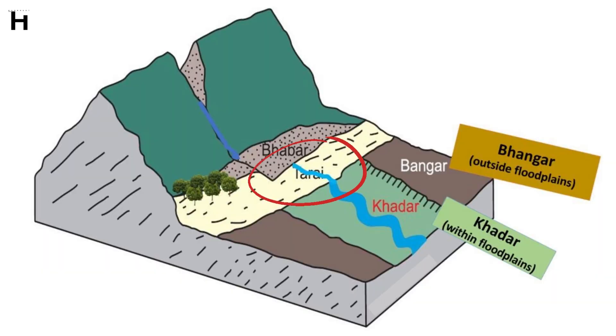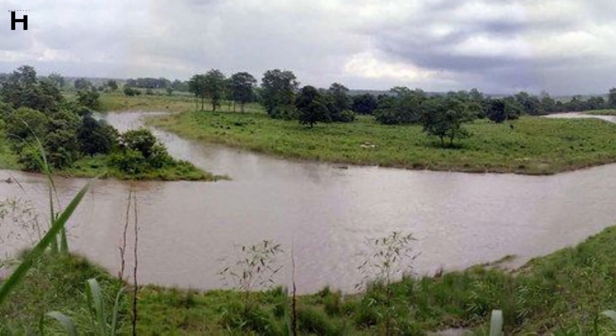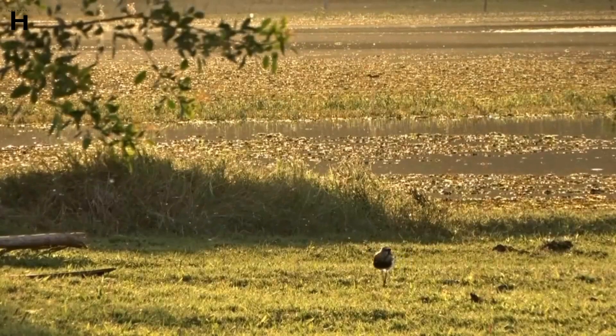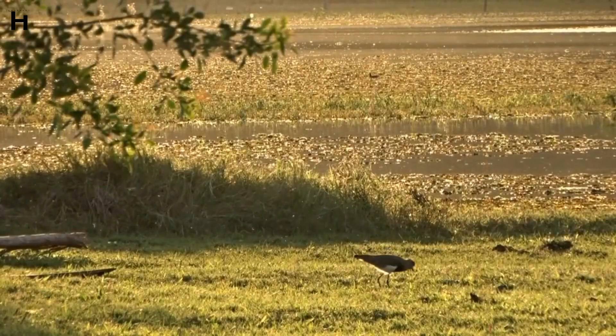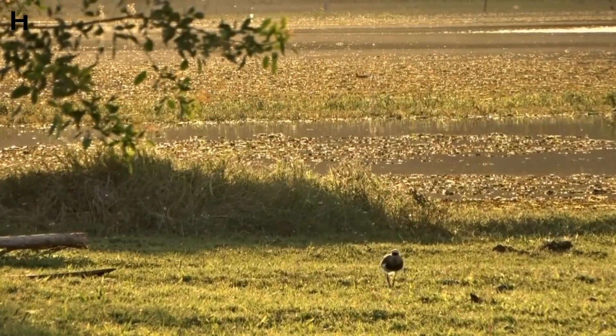The Tarai lies to the south of the Bhabbar and runs parallel to it. It is composed of comparatively finer alluvium and is covered by forest. The underground streams of the Bhabbar re-emerge on the surface and give birth to a marshy area. Most parts of the Tarai area are reclaimed for agriculture.